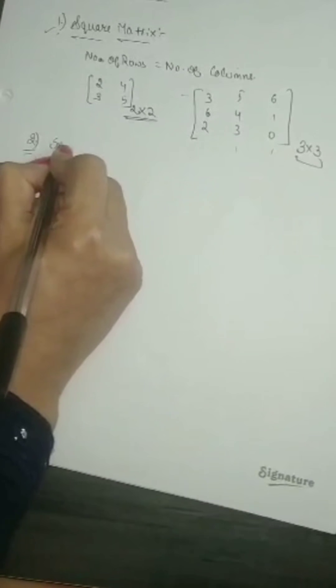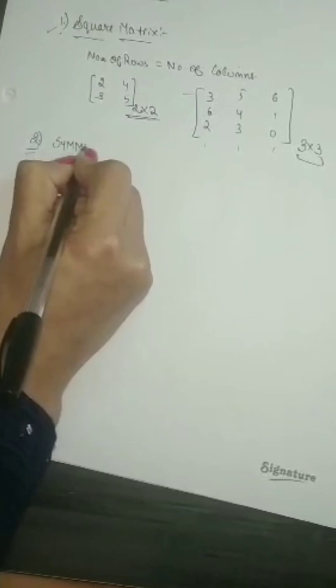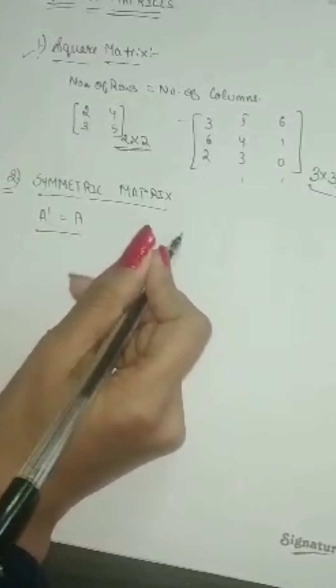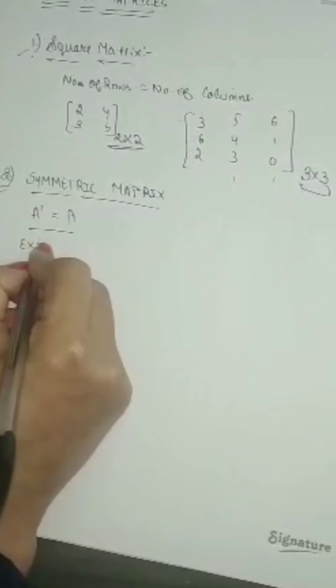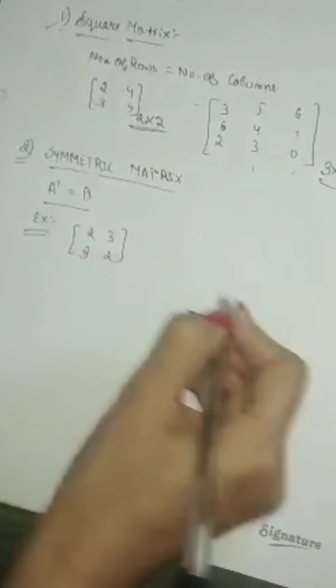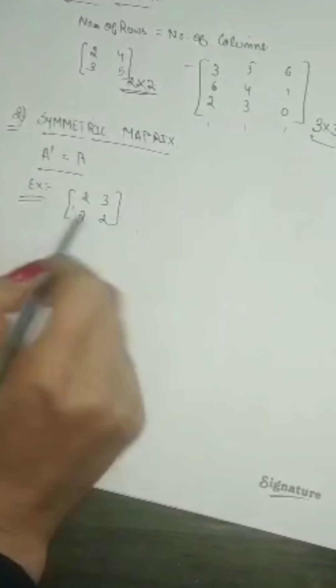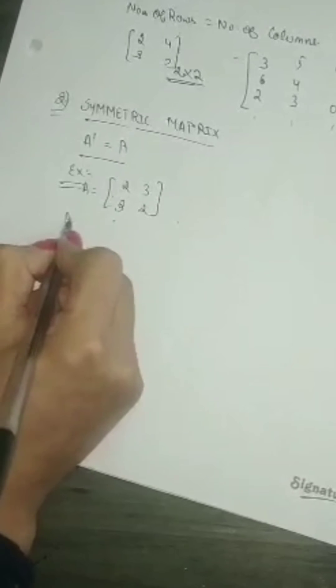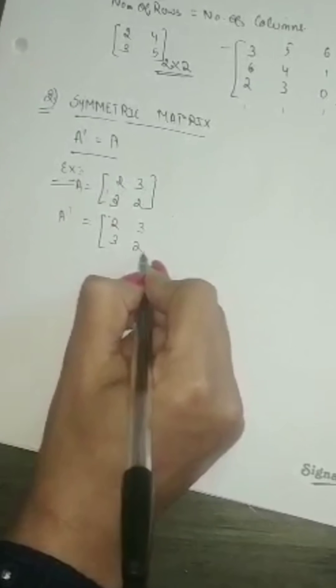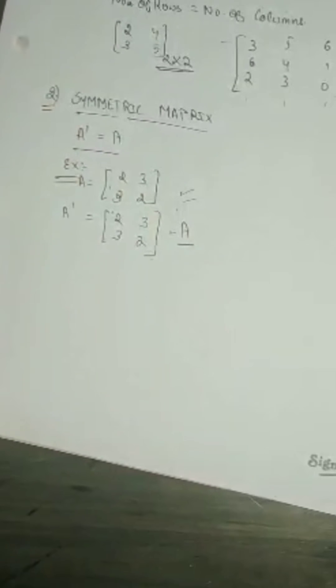The next type of matrix is called symmetric matrix. Symmetric matrix means after transposing the matrix, the matrix should be the same. For example, we are having matrix A: 2, 3, 3, 2 — it has 2 rows and 2 columns. If we find A transpose — change this row to this column: 2, 3, and change this row to this column: 3, 2 — the matrix is again the same. So this matrix is called a symmetric matrix.